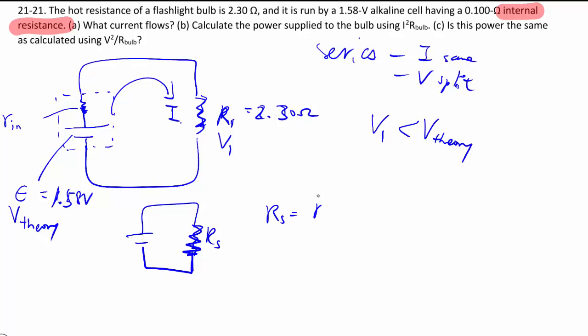Where RS is equal to R1 plus little r in. Just like that. So given that my V source, the only thing supplying the voltage is 1.58 volts as given, then the current through the circuit is just Vs over RS because we only have the one equivalent resistance now. The circuit is simple again.